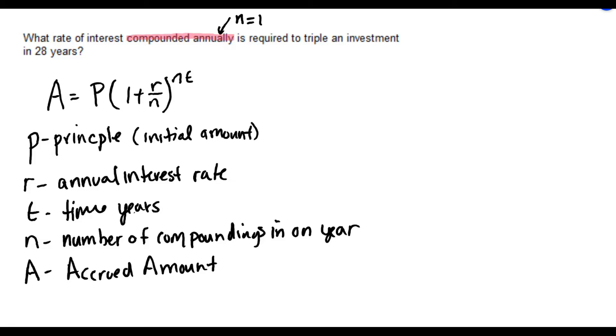So in this problem, it says what rate of interest. That means R is our unknown that we're trying to find. I already mentioned that it says compounded annually, which tells us that N is 1.